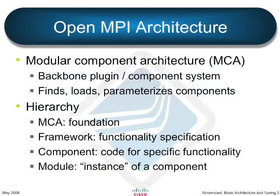OpenMPI is based on what we call the Modular Component Architecture, MCA. It's an acronym you'll see all over the place. It has to do with how we select which plugins are used, and it's the thing that we use for our runtime parameter system. It's really the backbone of the entire OpenMPI system. It controls which plugins are loaded, and it's all about our parameterization system.